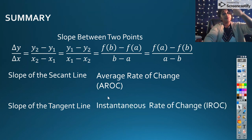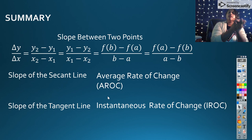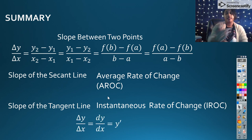This is what we refer to as instantaneous rate of change. We can estimate the instantaneous rate of change of something using the average rate of change around it. Or what we're going to find out next class is that our instantaneous rate of change is the definition of our derivative.